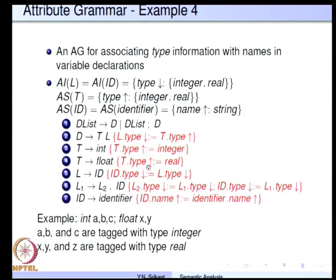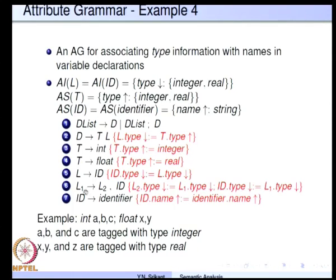The notation for inherited attributes uses a down arrow, and computation rules for inherited attributes are written on the right-hand side of the production. L has inherited attributes so we provide a computation rule; we do not provide a rule for T's synthesized attribute in the production D going to T L because T is on the right-hand side there. Two important notes: attribute evaluation cannot be done along with LR parsing when there are inherited attributes, and LL parsing of this grammar is not possible because it is left-recursive.